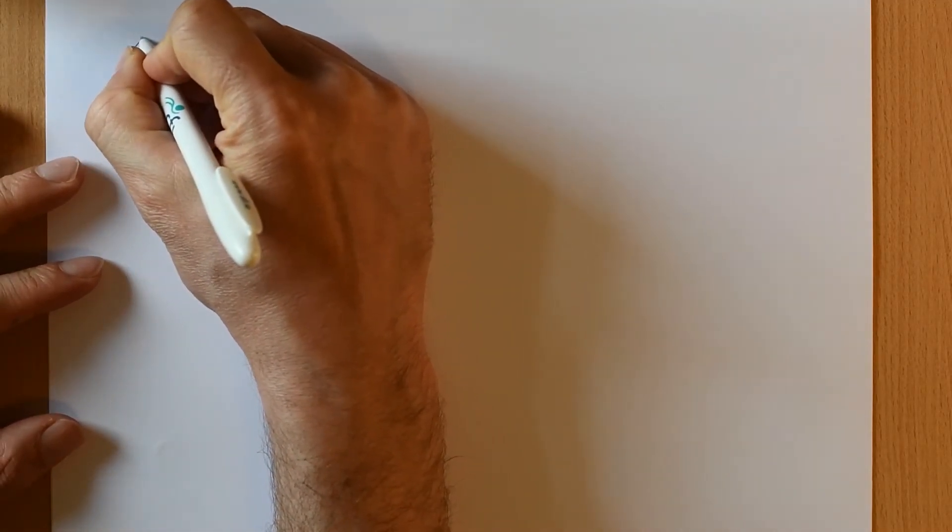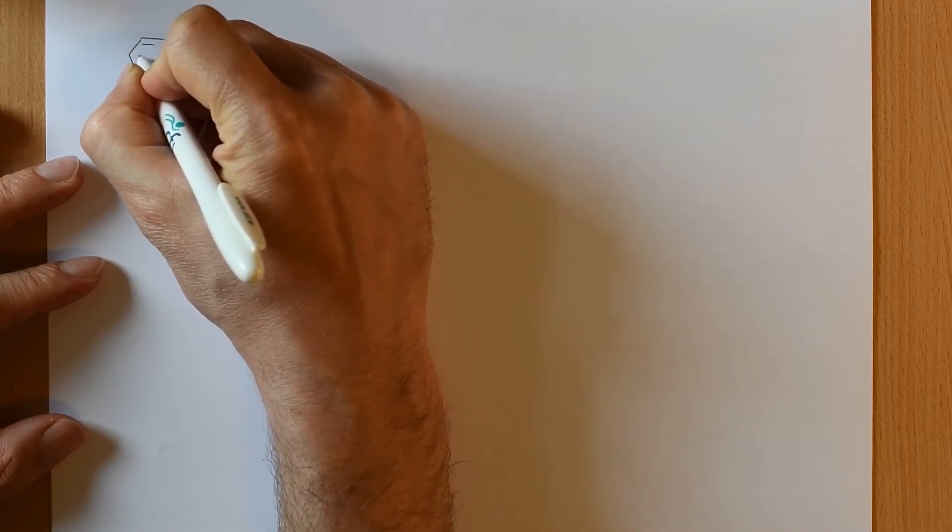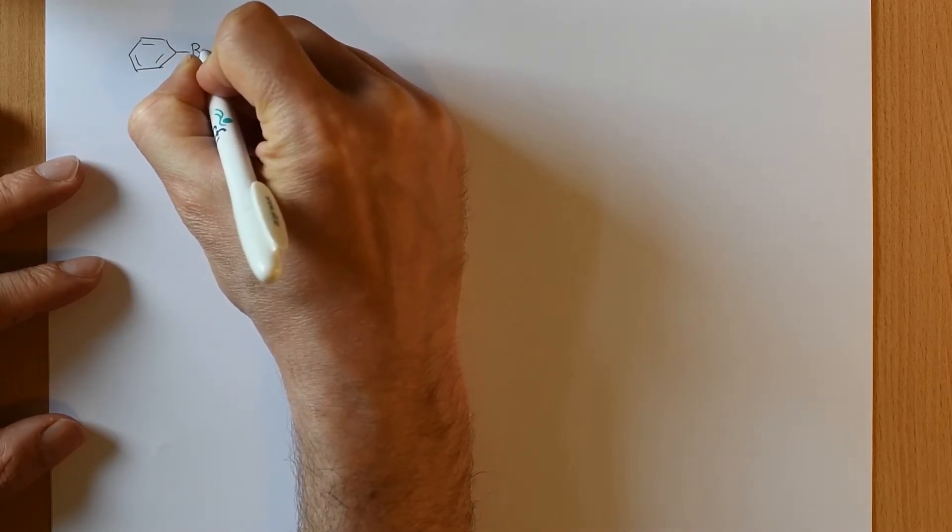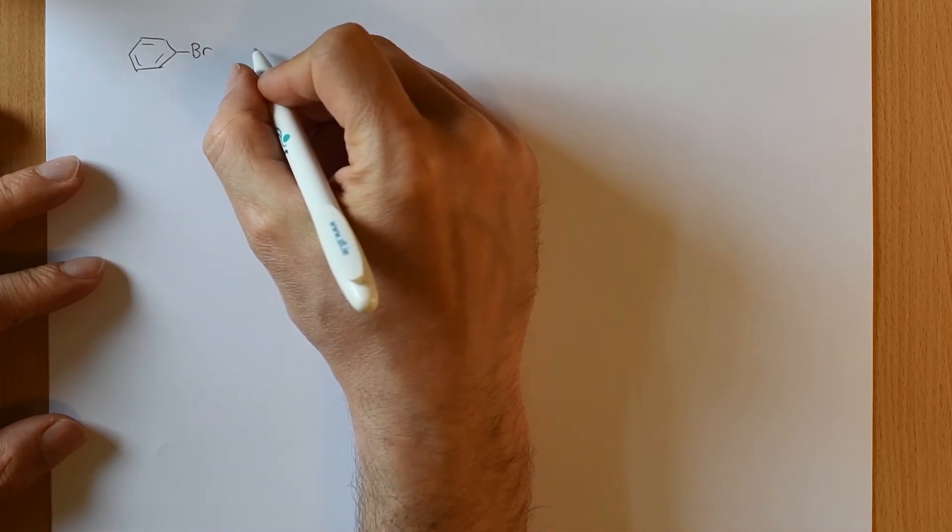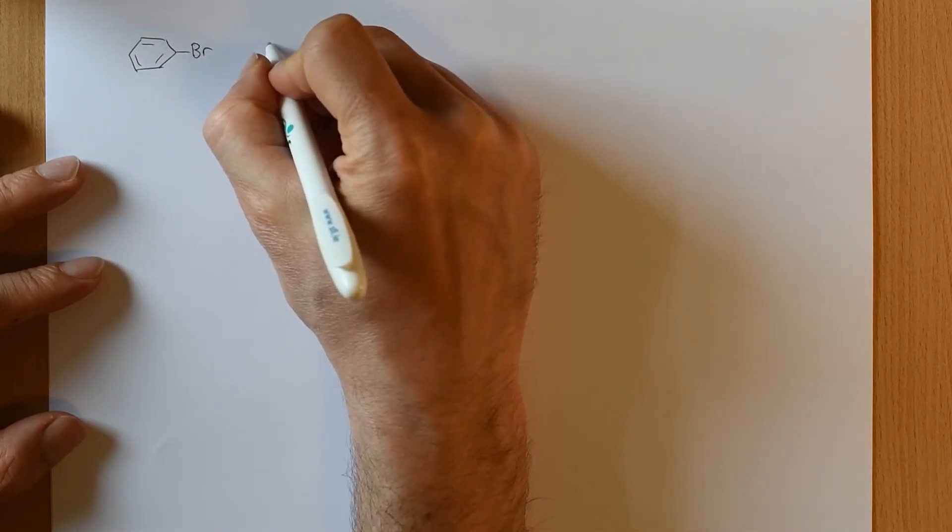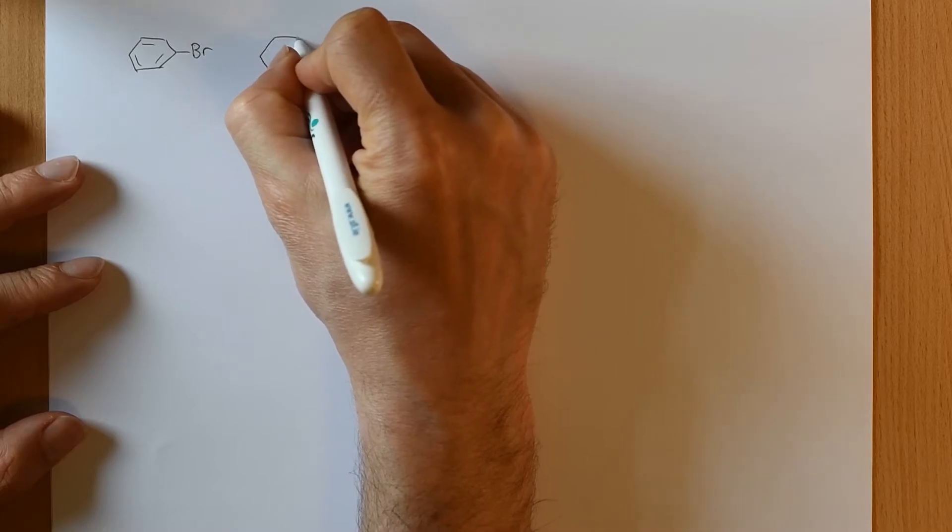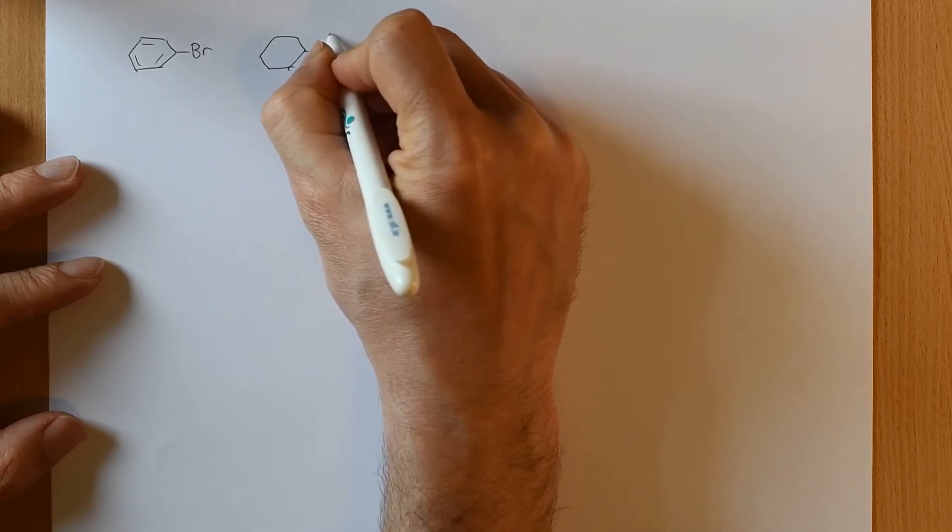So now we're going to have a look at transmetallation. And to do that, I'm going to show you an example. This is a Kumada coupling. The Kumada coupling is similar to the Suzuki coupling, except in this case we're using a Grignard reagent instead of a boronic acid. So if we take bromobenzene, as we have been doing, we know that the oxidative insertion step is going to happen.